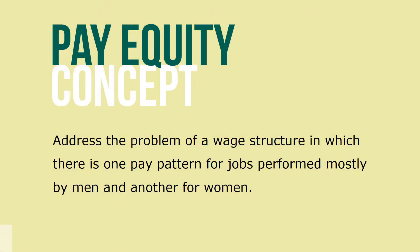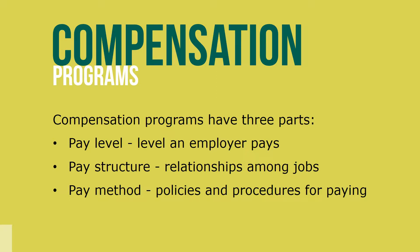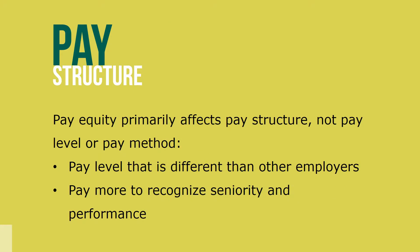Pay equity is designed to address the problem of a wage structure in which there is one pay pattern for jobs performed mostly by men and another pay pattern for jobs performed mostly by women. It's important to understand that compensation programs have three parts: pay level, pay structure, and pay method. The pay level is simply the level an employer pays in comparison to other employers. The structure is the relationships among the jobs in the organization, and the method is the set of policies and procedures for paying individual employees. Pay equity primarily affects pay structure, not pay level or pay method.